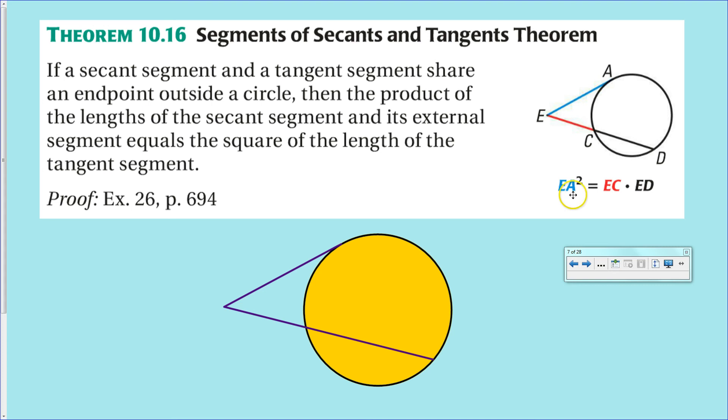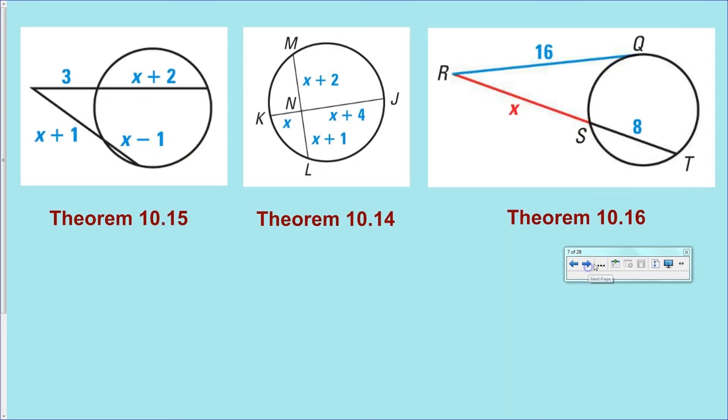Anyway, this is the resulting algebraic equation that happens from it. You take whatever the length of the tangent is, square it, set it equal to the short segment, and again, times the whole segment, not the longer segment or the chord inside the circle.